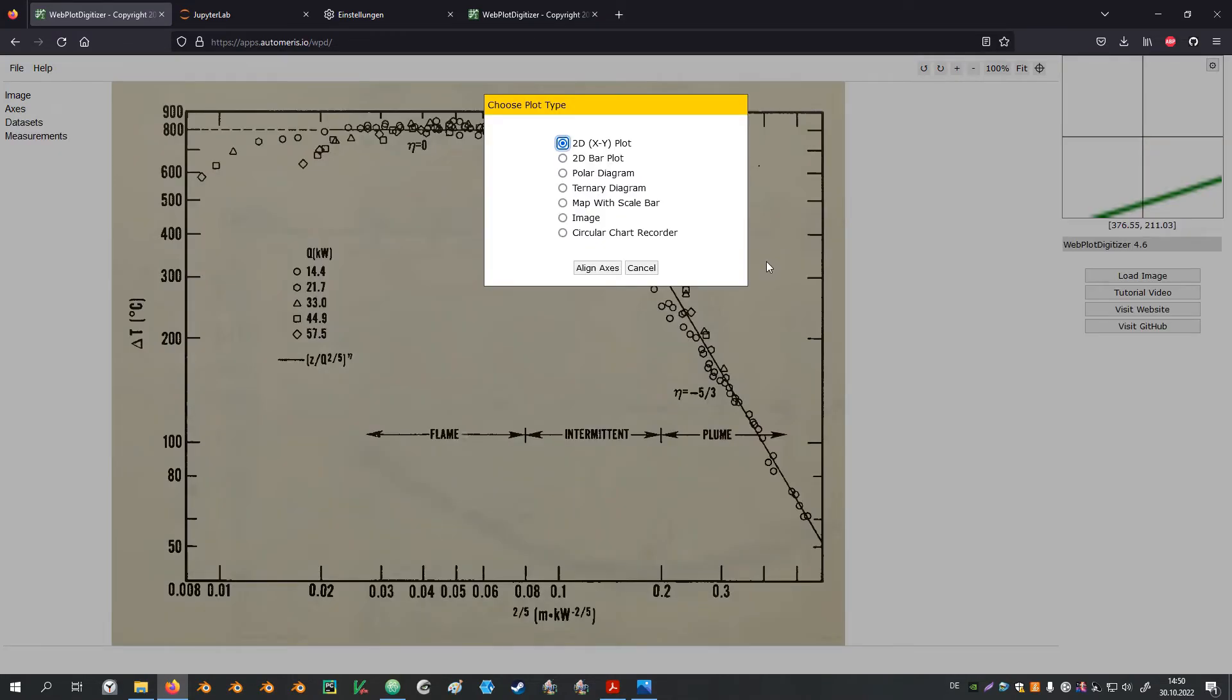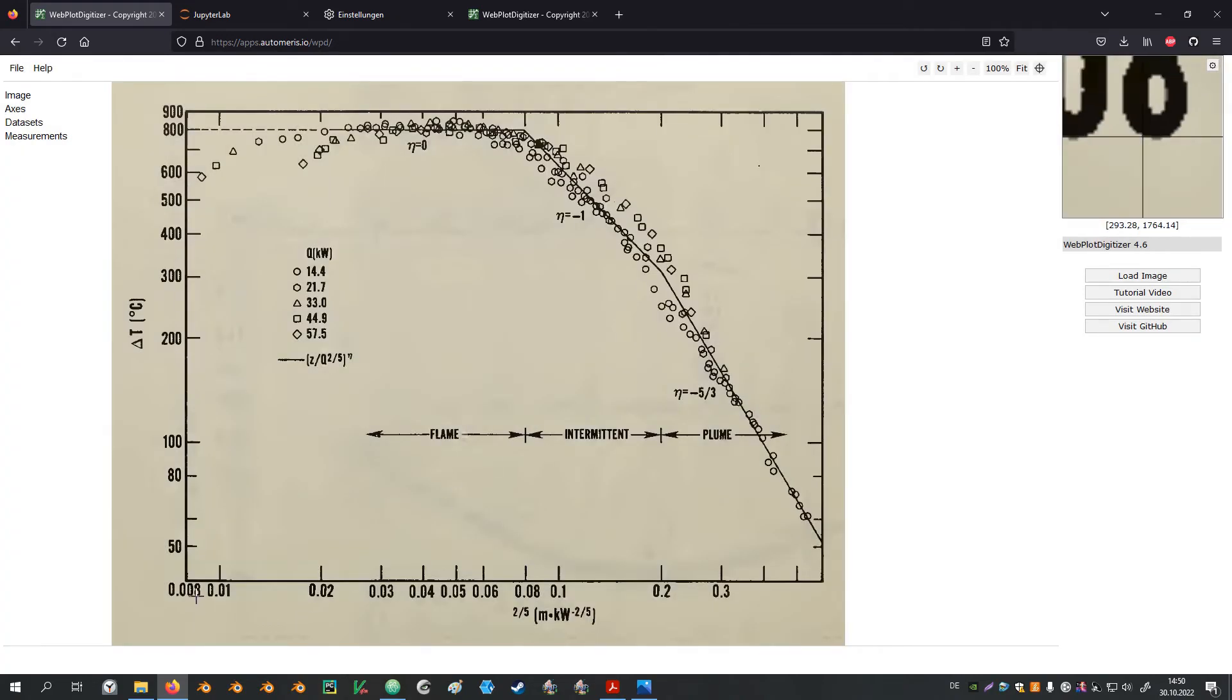Now let's have a brief look at this plot which has logarithmic axis. We start again with the axis align and locate our four points. The x point I start at 0.008 and then go to 0.3. For y now I start at 50 and go to 900. So this also highlights that we do not need to have the x and the y axis cross in the origin. Important is just to have known points to define the axis.